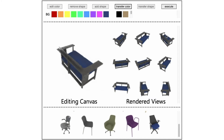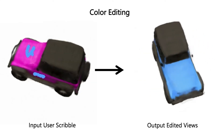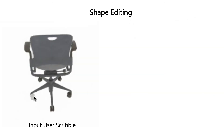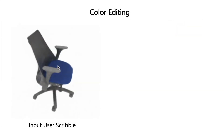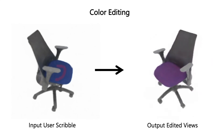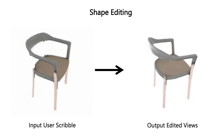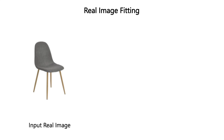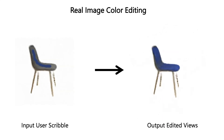Next, we visualize additional color and shape editing results. We also edit the appearance and shape of a real photograph. We first fine-tune our conditional radiance field on a single real image. Then, we apply our editing method to conduct local edits to the instance, like changing the color of a chair body or removing the legs of a chair.